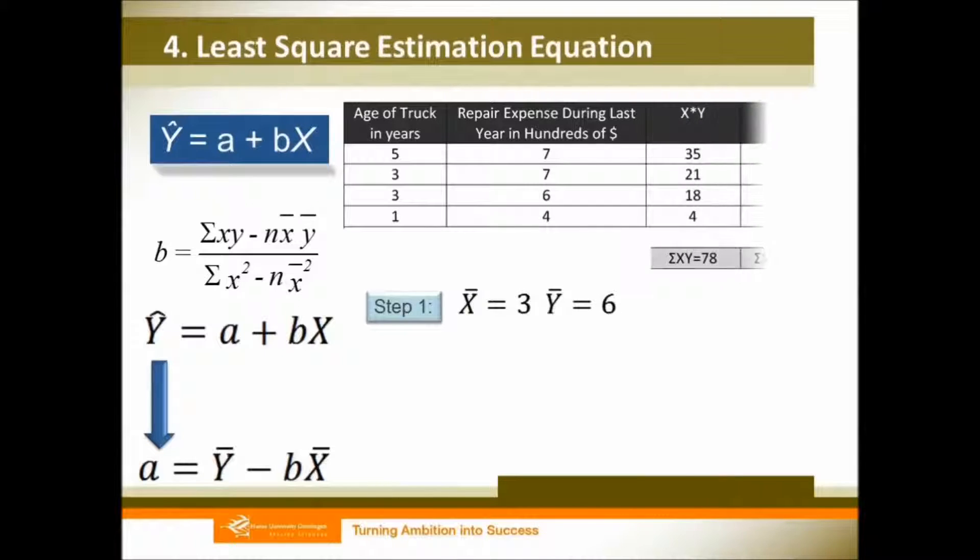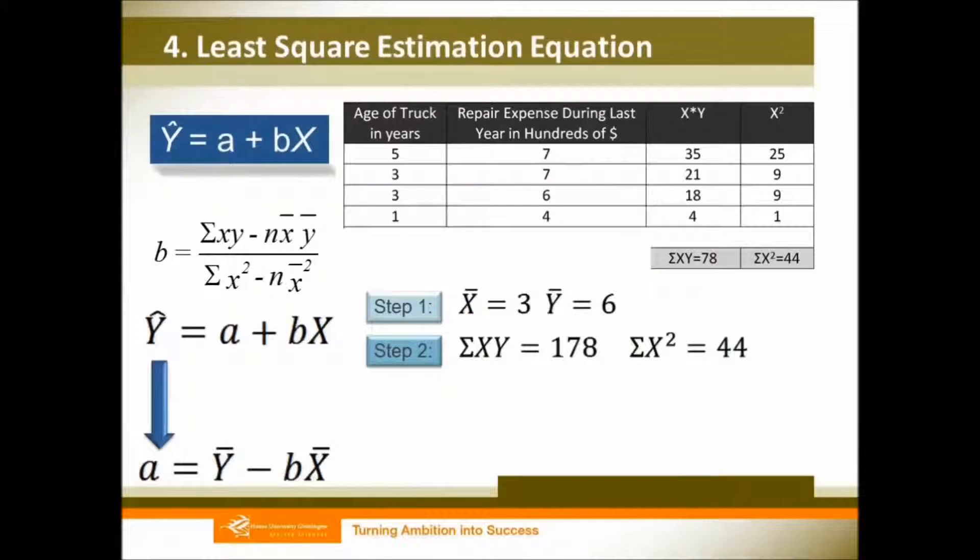Step 2: We expand our table. We use x times y for each variable, one by one, and then sum it up. Then we use x variable, square it one by one, and sum it up. Then we can go back to this very complicated equation.